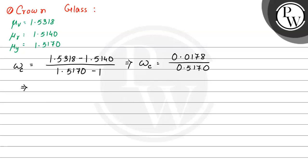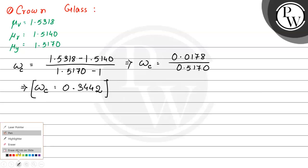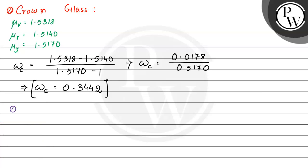This gives us 0.0178 divided by 0.5170, which equals approximately 0.0344. So that is the dispersive power for crown glass. Now we will find out for flint glass.